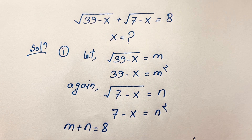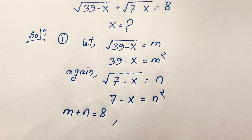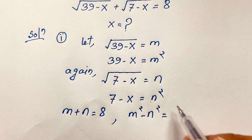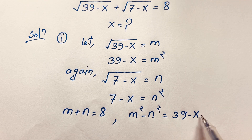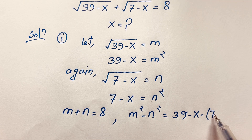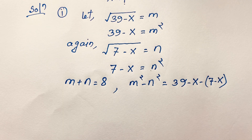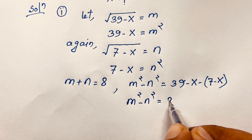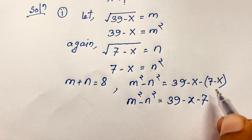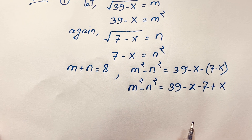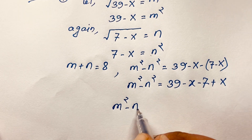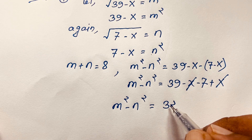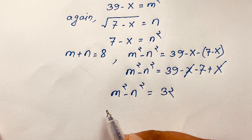So m plus n equals 8. Our target is to find m minus n. I subtract the squared equations: m squared minus n squared equals (39 minus x) minus (7 minus x), which simplifies to 32, since the x terms cancel out and 39 minus 7 equals 32.